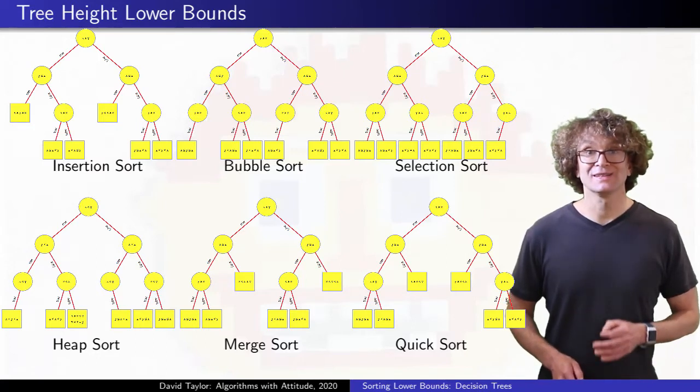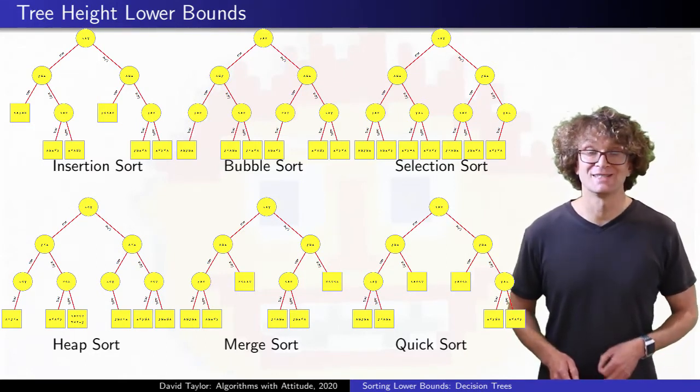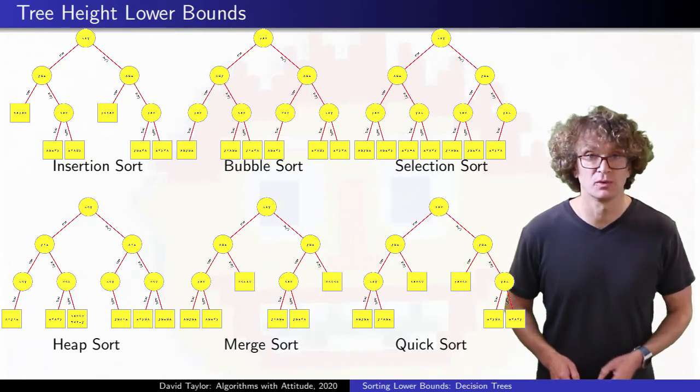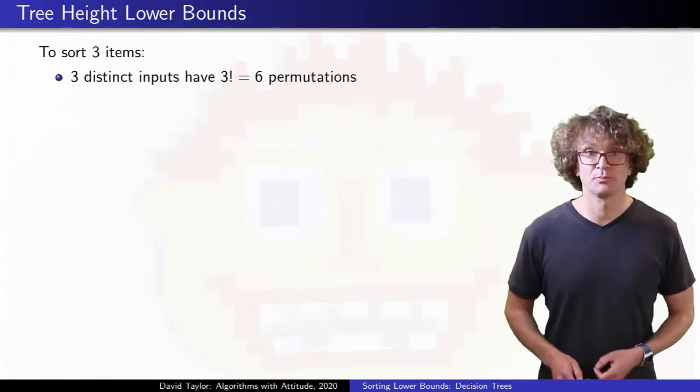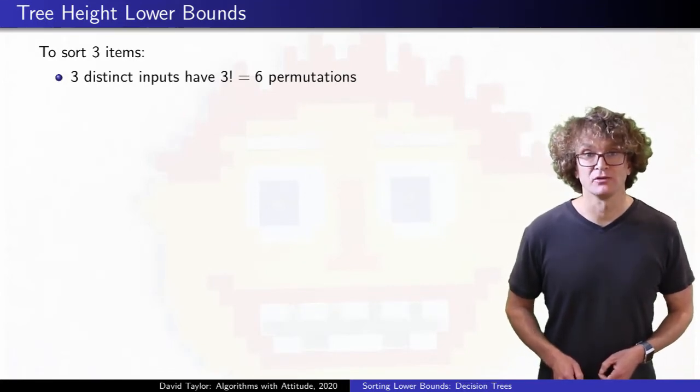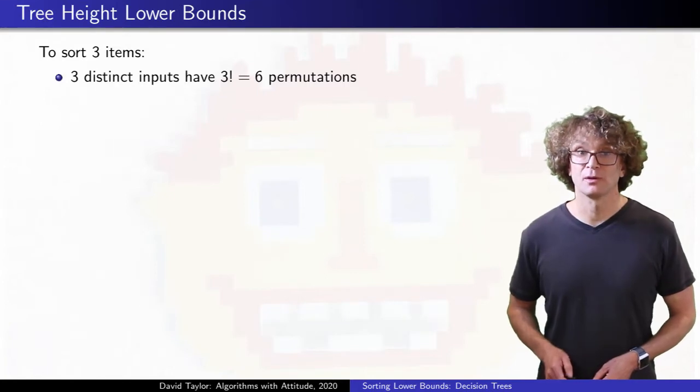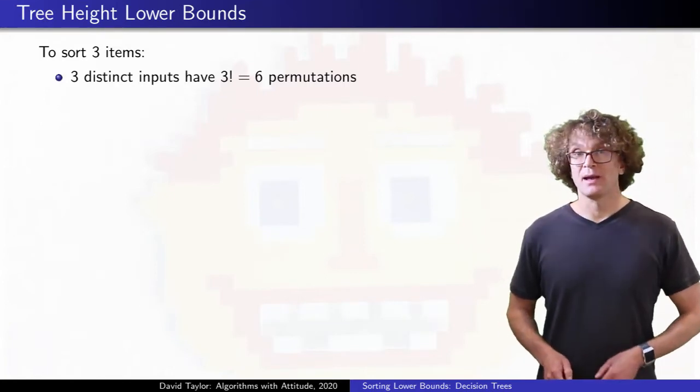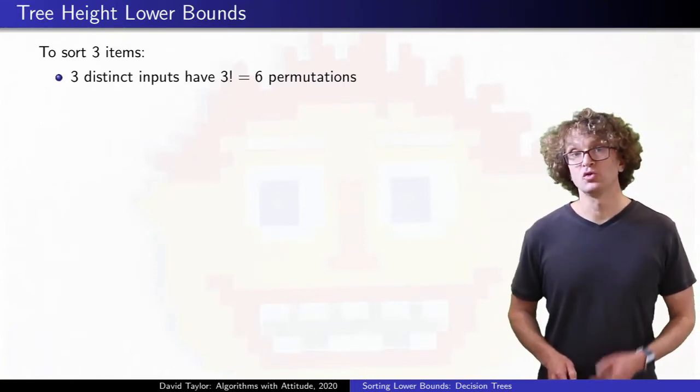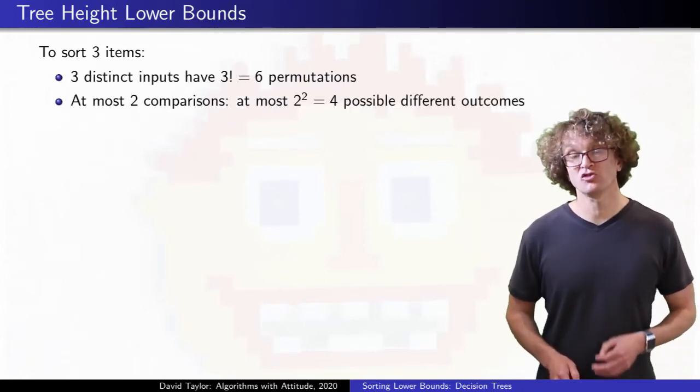Each of these trees has at least six leaf nodes, because if I give the program three distinct values, like 1, 2, 3, there are six possible permutations that you can order the input. Each comparison has at most two children, for the possible outcomes of the comparison. If I try to make a binary tree with at most two comparisons, it gives me a tree with height at most two, with at most four leaves.